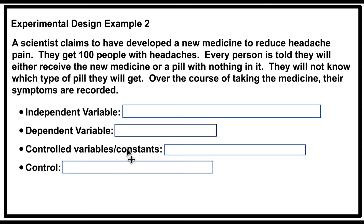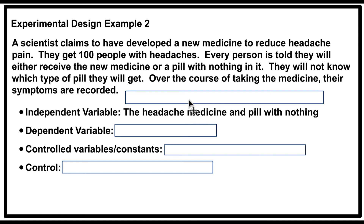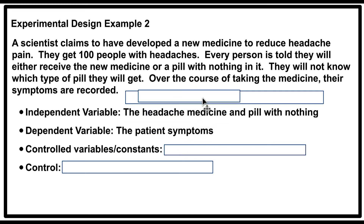Let's do another experiment. A scientist claims to have developed a new medicine to reduce headache pain. They get 100 people with headaches. Every person is told they will either receive the new medicine or a pill with nothing in it, and they will not know which type of pill they get. Over the course of taking the medicine, their symptoms are recorded. The independent variable is the headache medicine and the pill with nothing in it — that is what the scientists are comparing. The dependent variable, what they'll be measuring, is the patient's symptoms.